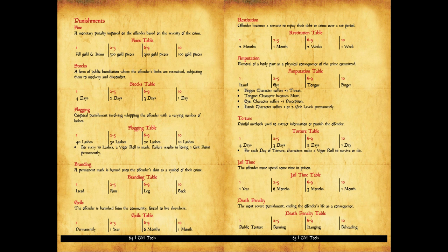Then you've got stocks — a form of public humiliation where the offender's limbs are restrained, subjecting them to mockery and discomfort. You roll to see how long that lasts. Then you've got flogging — you are whipped in the streets or in a public square and receive some lashes. You can also impose a physical toll according to the number of lashes.